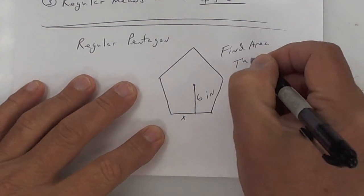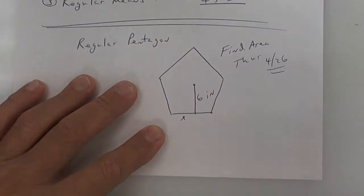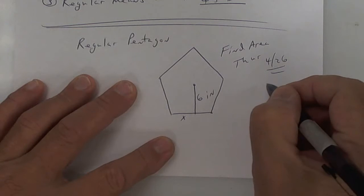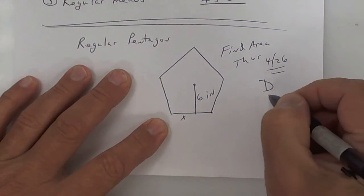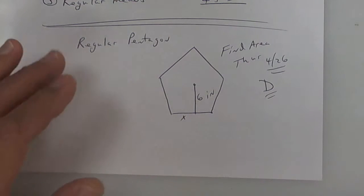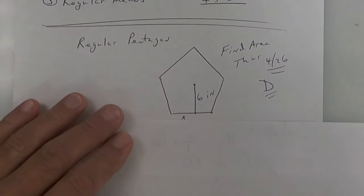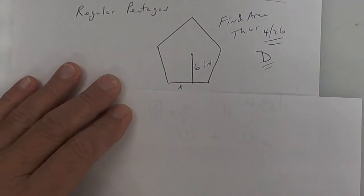Put A, B, C — put a D for Thursday. So here we go, exam review, some more problems. Yesterday I may have given you the wrong formula on this, so I want to correct that. Here's how you do this.